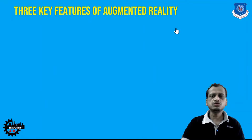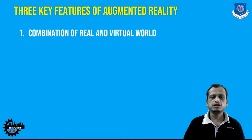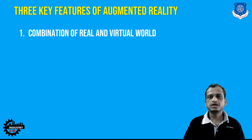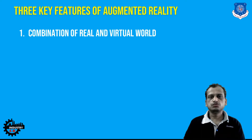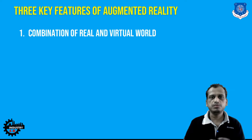Now let's look into three key features of augmented reality. Starting with the combination of real and virtual world — as seen in the previous example, the real world was the camera view, and virtual information was superimposed on top of it. That combination of real and virtual world is the first key feature of augmented reality.